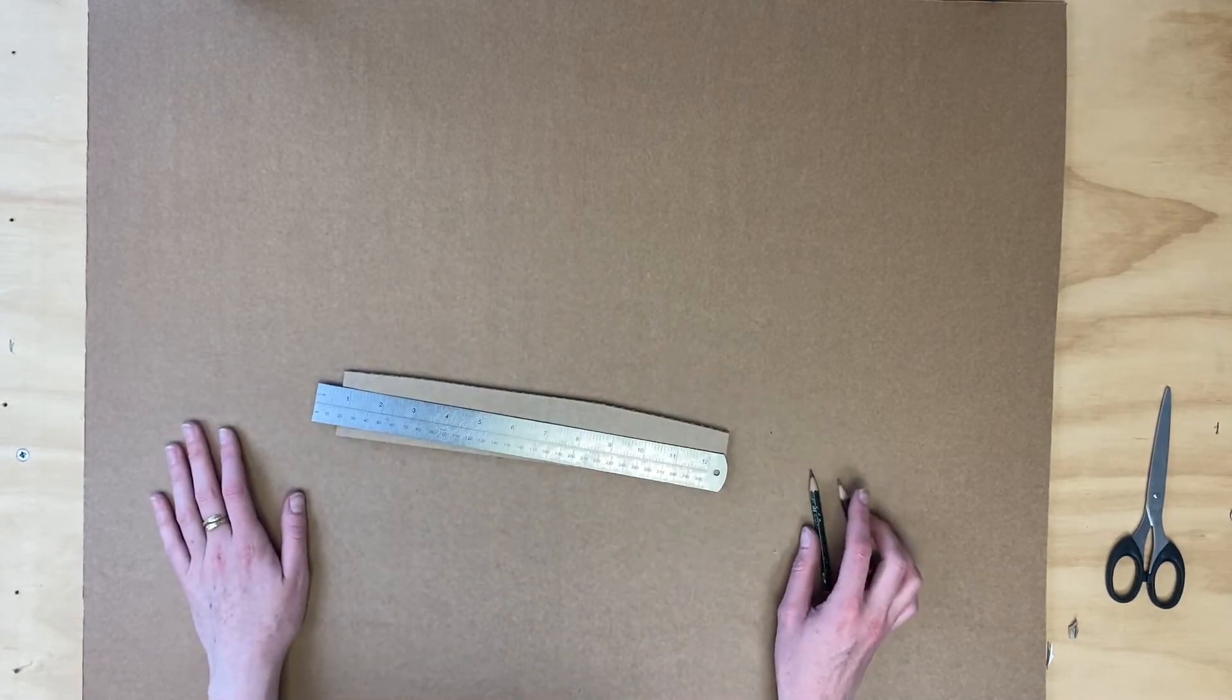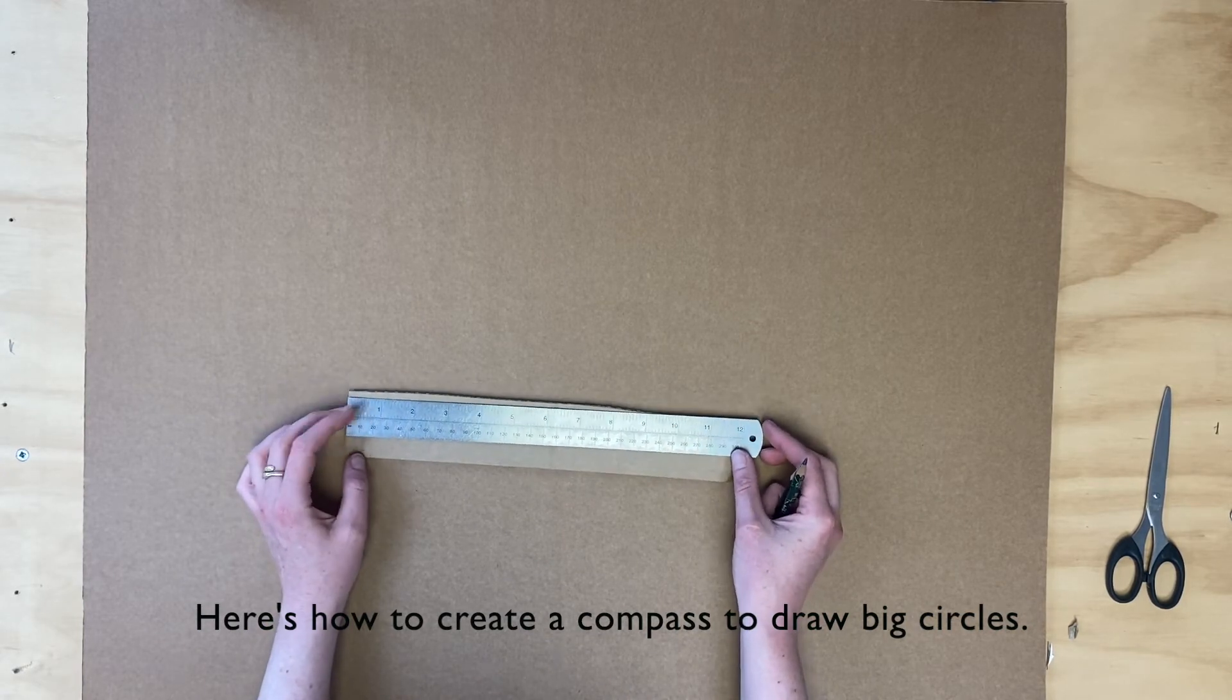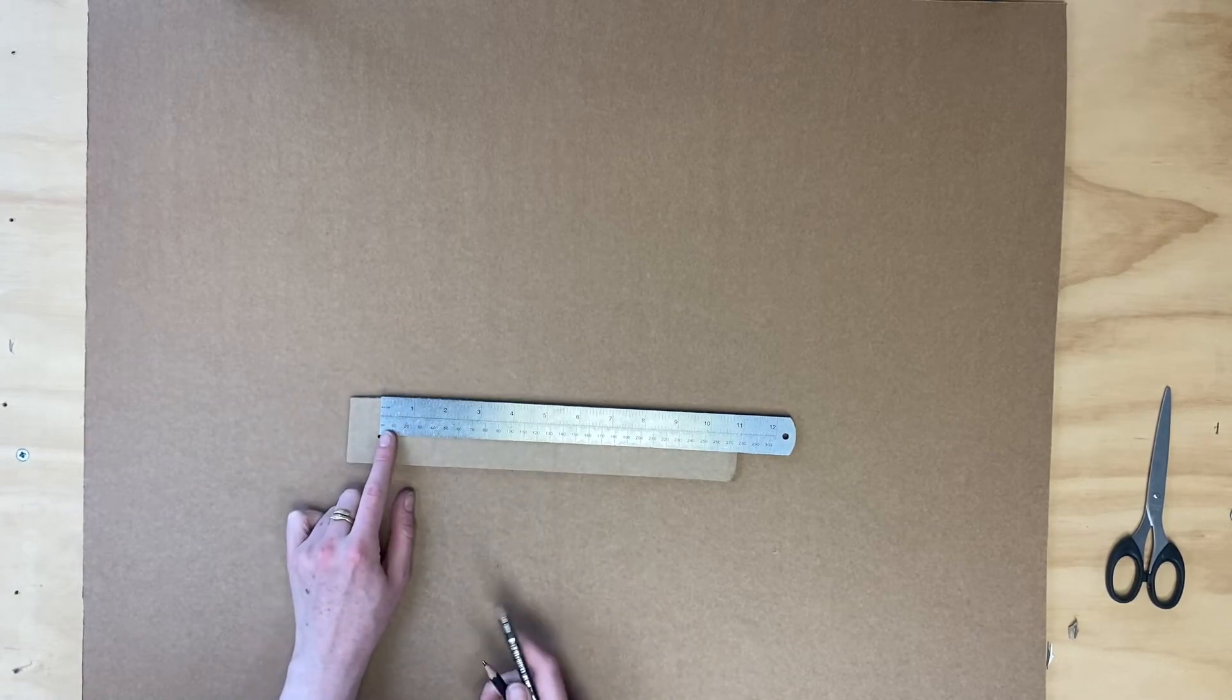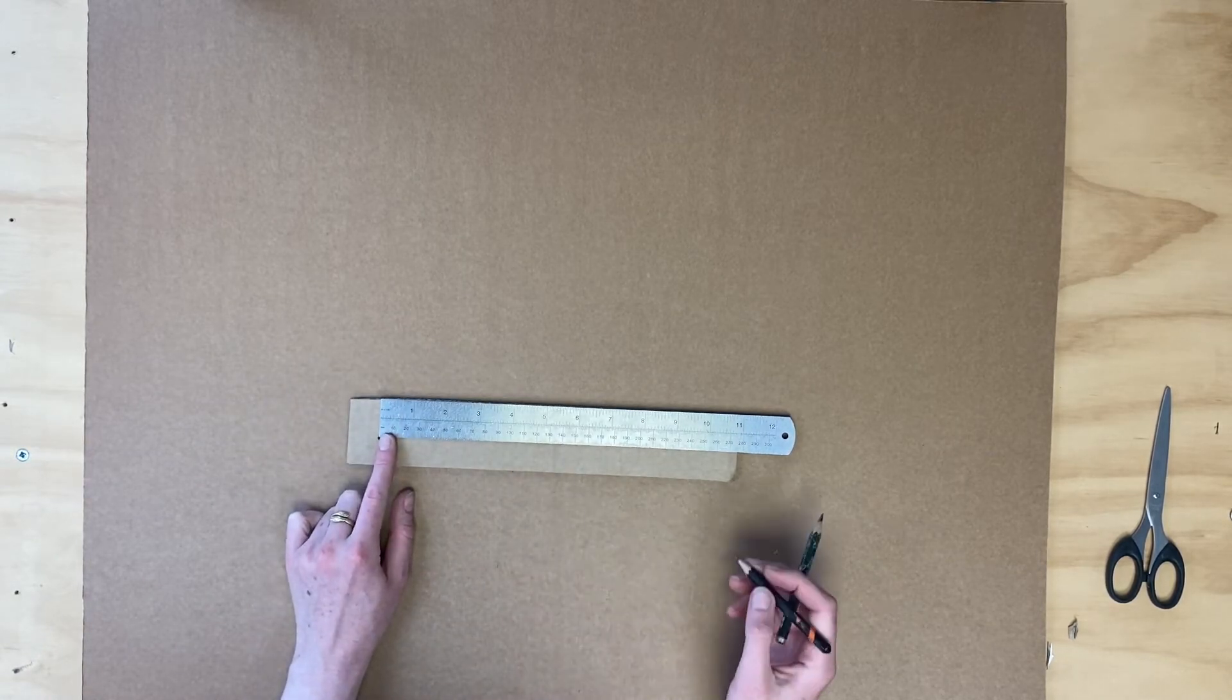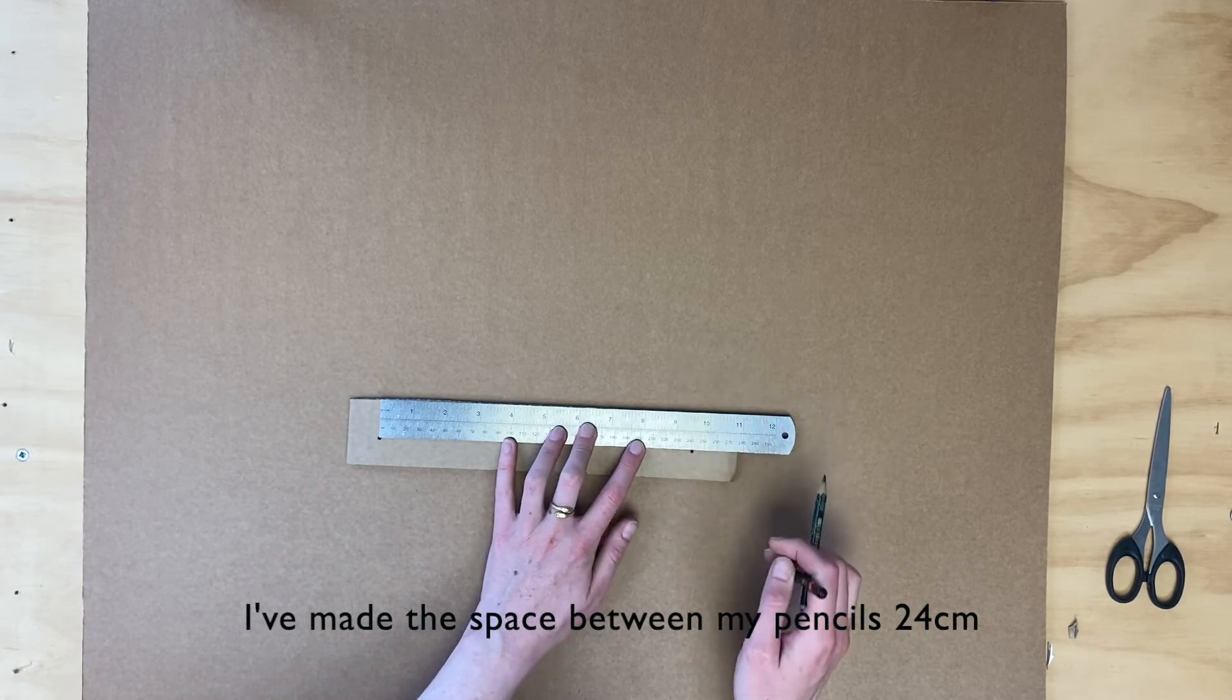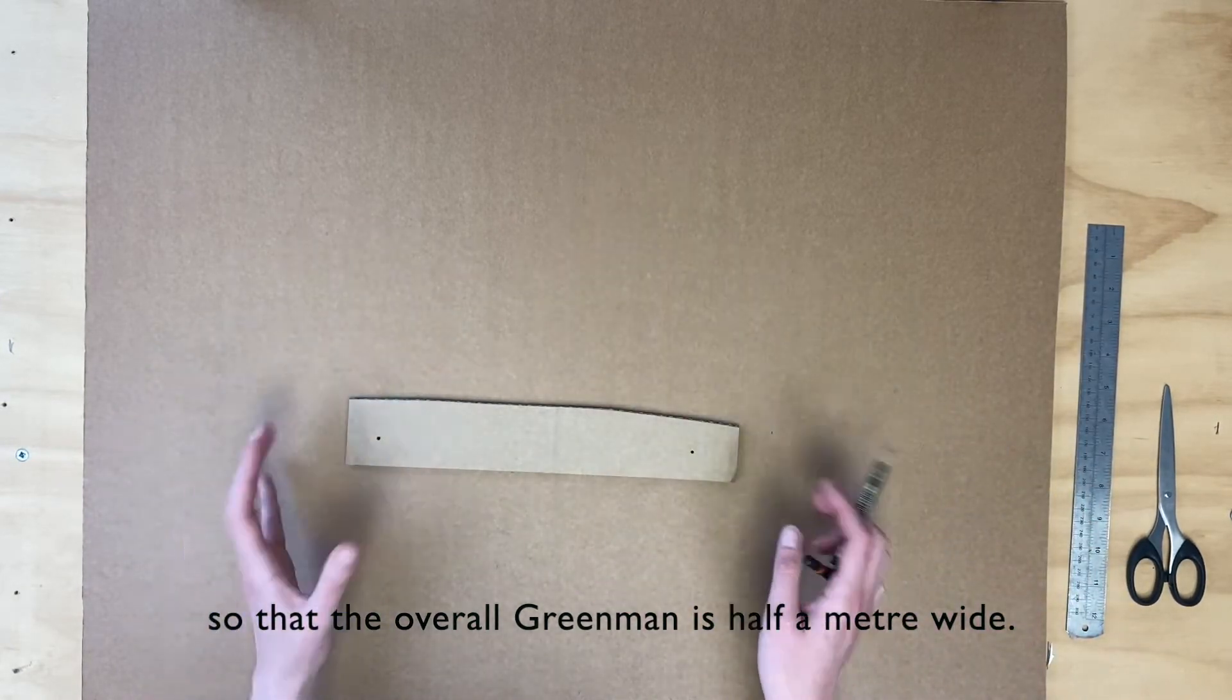So I'm going to show you how to draw out a big circle in case you don't have a compass. So you need two pencils. You make one hole at zero, and I'm going to put the second one at about 24 to make my face about half a meter wide.